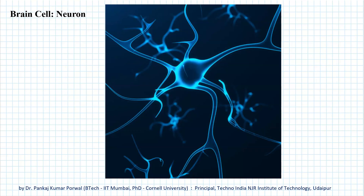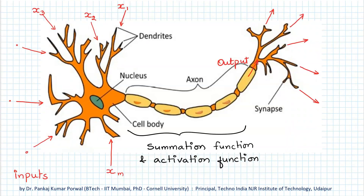If we look at the structure of a neuron, it has a main part which is called the cell body and a main stem which is called the axon, and there are a large number of tentacles coming out of both the cell body and the axon. In the model of this neuron, the tentacles coming out of the cell body receive input from other neurons, and the tentacles coming out of the axon are output tentacles which give inputs to other neurons.